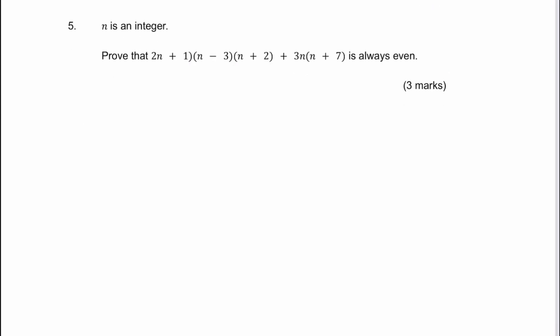Here we are in question number five. It says n is an integer or a whole number. Prove that (2n+1)[(n-3)(n+2) + 3n(n+7)] is going to be equal to an even number. So therefore if it's an even number it must always be a multiple of two. I'm just going to actually write that in. So it must be a multiple of two.